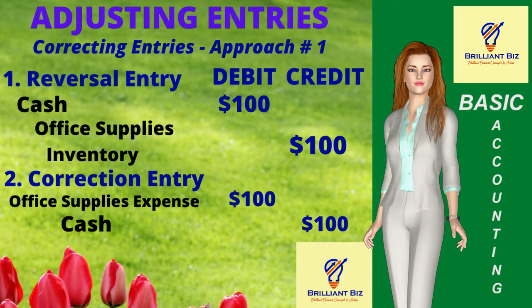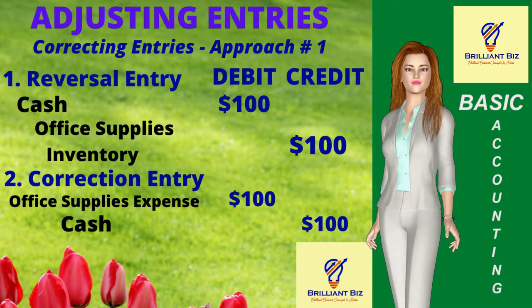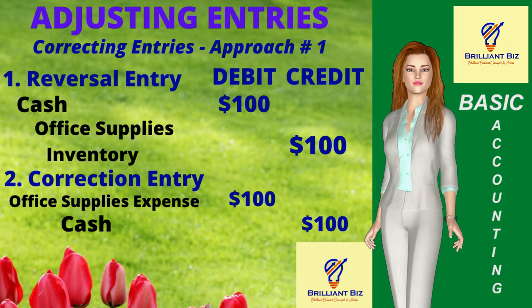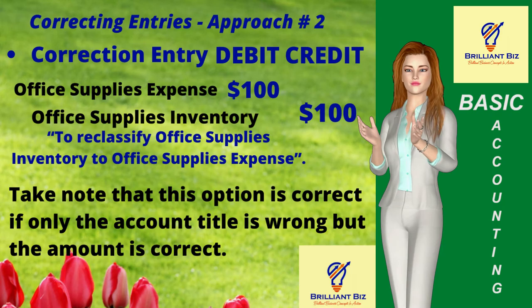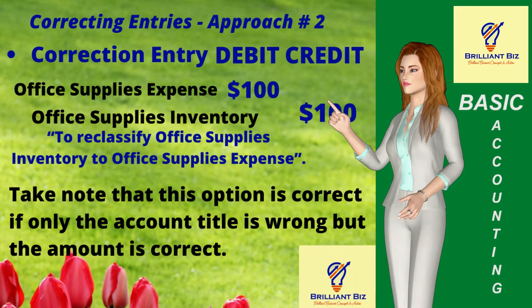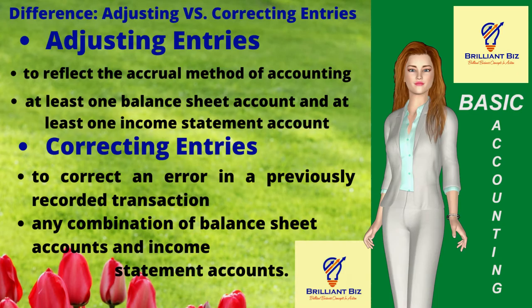The correcting entry applying approach number one — reversing the first entry — is debit cash $100 and credit office supplies inventory $100, and then the second entry is debit office supplies expense $100 and credit cash $100. Under the second method, the adjusting entry is debit office supplies expense $100 and credit office supplies inventory $100. Take note that this option is correct if only the account title is wrong but the amount is correct.